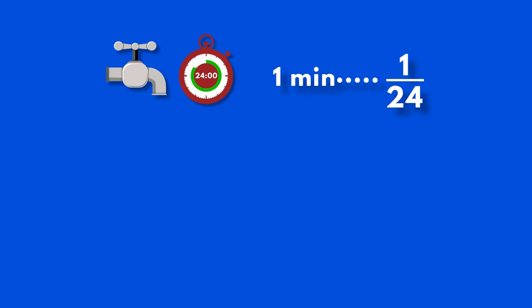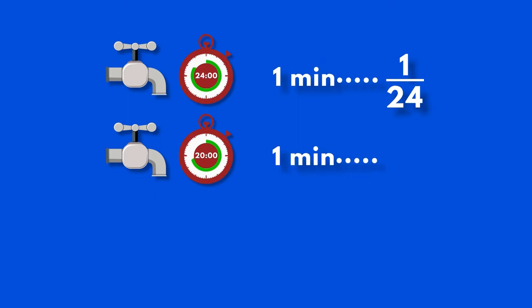If the first tap alone could fill the whole pool in 24 minutes, in just one minute it would have filled 1 over 24 of the pool. If the second tap alone could fill the pool in 20 minutes, then in one minute it would have filled 1 over 20 of the pool.